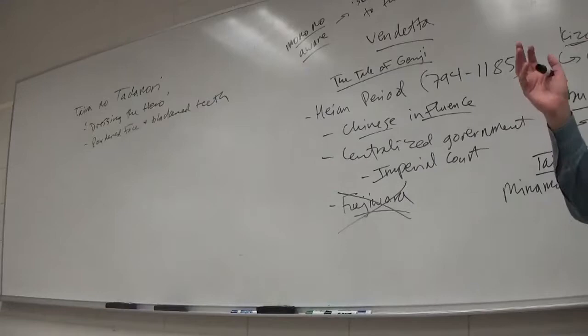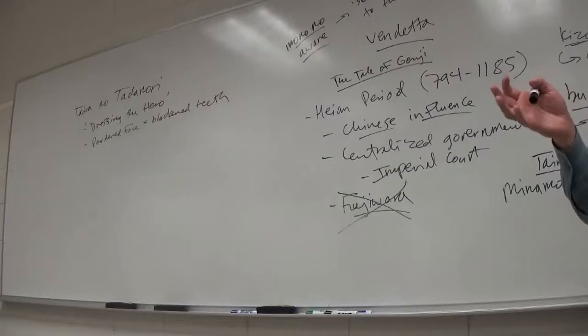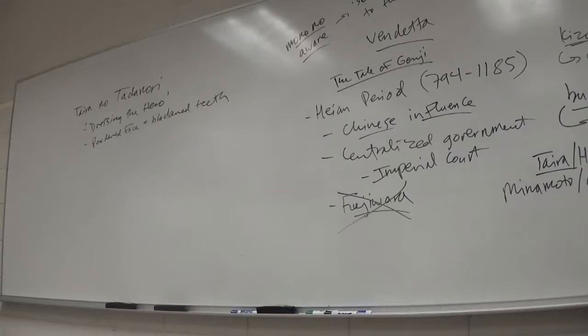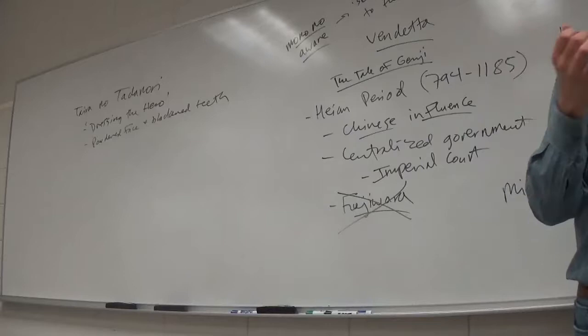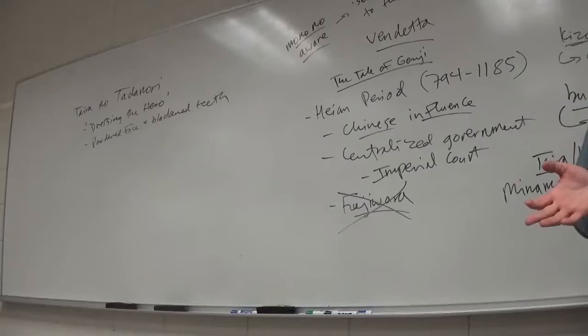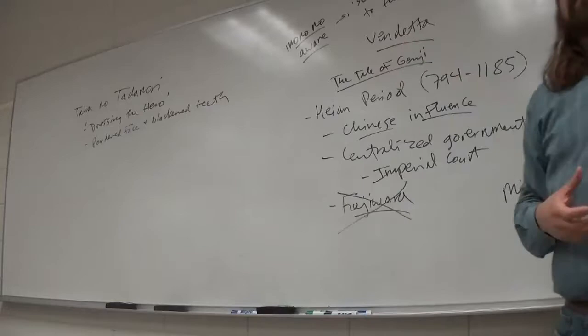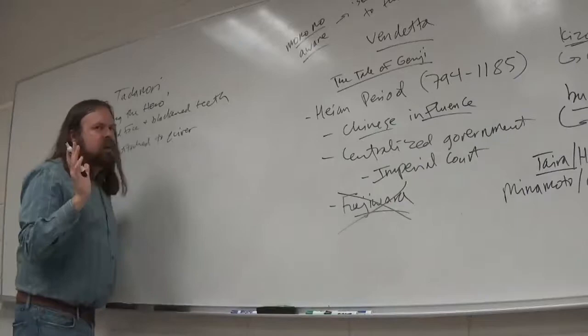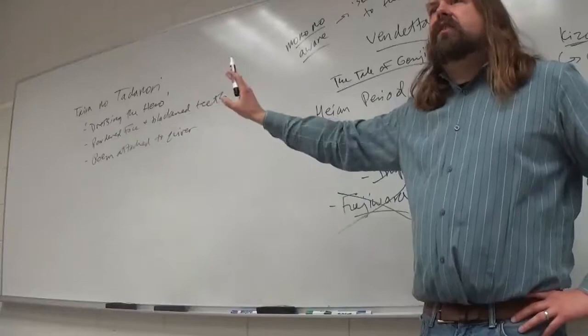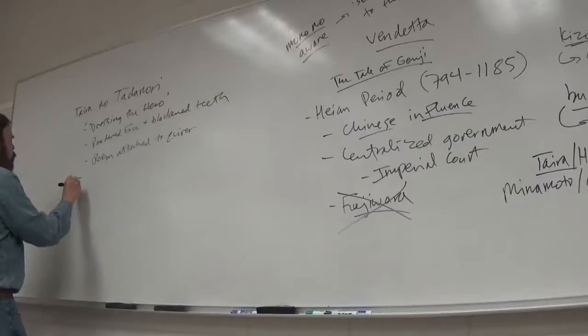Teeth in their natural state were considered ugly, and so Japanese courtiers actually blacked them out so you couldn't see them. The poem that is attached to his quiver - this is also evidence that he's a courtier and not just a warrior. The parallel episode immediately afterwards with Taira no Atsumori, who also has the powdered face and blackened teeth and is carrying a small flute.